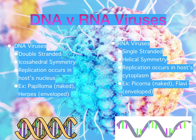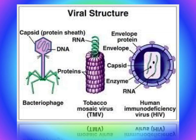DNA versus RNA viruses — what is the difference? All viruses are made up of some genetic makeup, whether it be DNA or RNA, but cannot be made up of both. DNA viruses are double-stranded, they have icosahedral symmetry, and their replication occurs in the nucleus of the host. RNA viruses, on the other hand, are single-stranded, they have helical symmetry, and their replication occurs in the cytoplasm of the host. In this diagram, you can see both a virus with DNA enclosed and a virus with RNA enclosed. If you look carefully, you can also see other aforementioned characteristics of viruses.